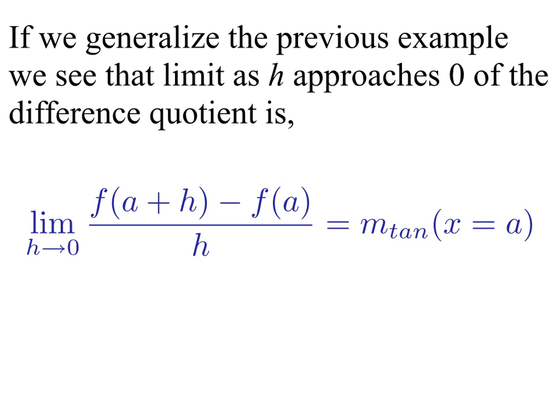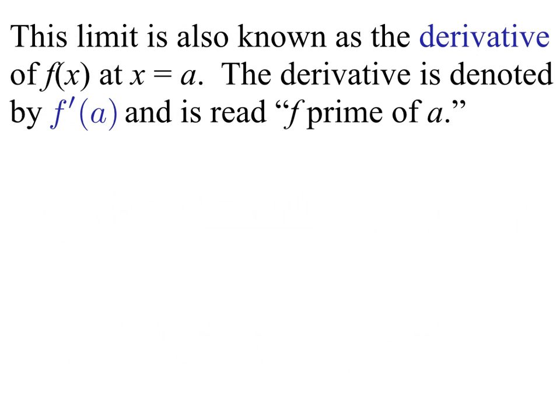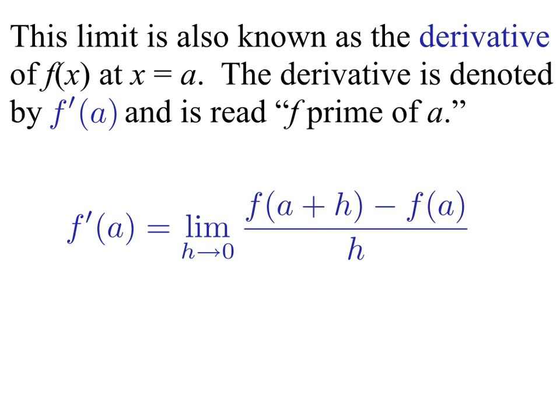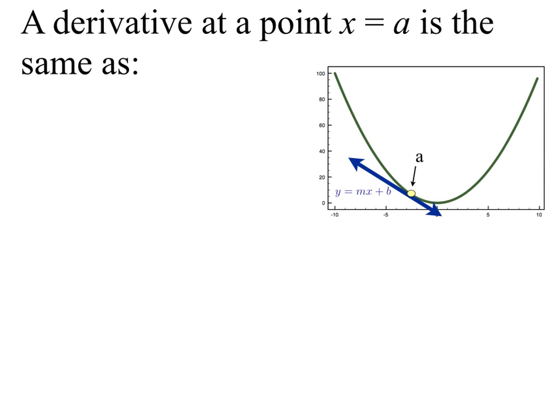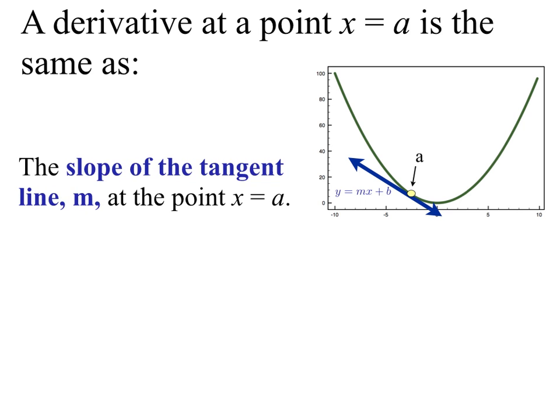Taking the limit as h goes to zero of that difference quotient gives us the slope of the tangent line at x = a. This limit is also known as the derivative in calculus — so the limit of the difference quotient is called the derivative of f(x) at x = a. The derivative is denoted by f prime of a, written with a tick mark: f'(a). And so f'(a) is the limit of that difference quotient.